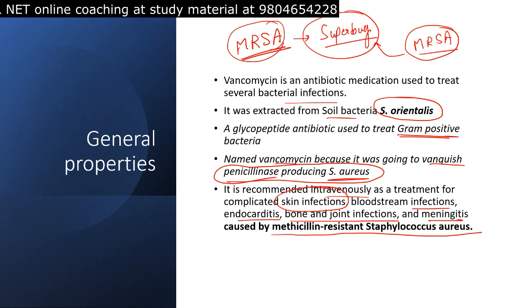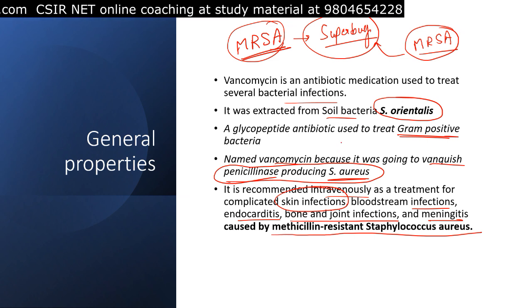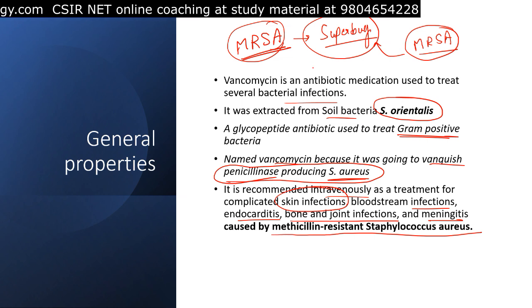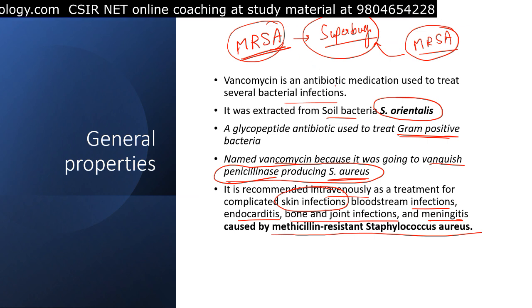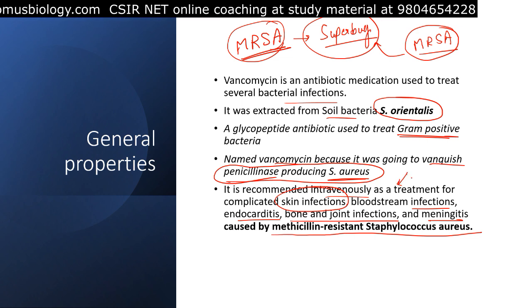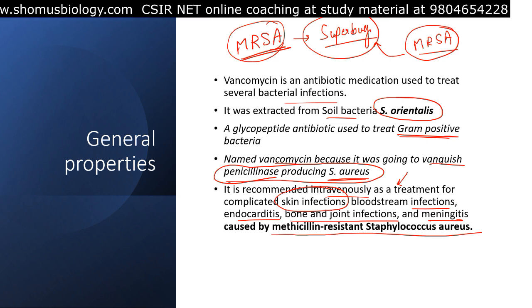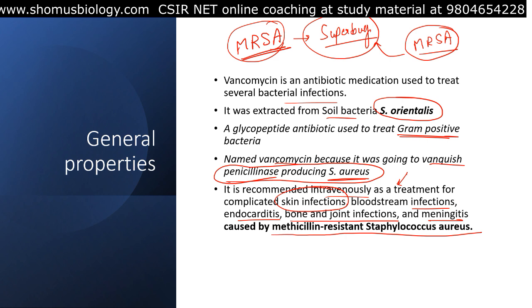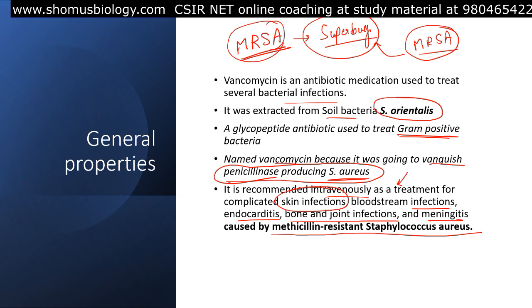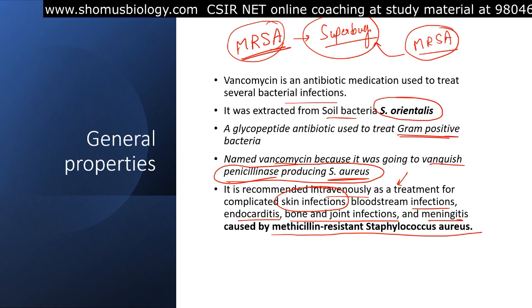Methicillin is the antibiotic that generally kills Staphylococcus aureus, but if that bacterial species is resistant against methicillin, we only have vancomycin to treat that infection. It is used intravenously for treatment of delicate area infections — skin infections, bloodstream infections, endocarditis, bone and joint infections, and meningitis.